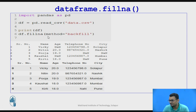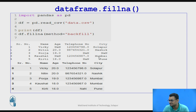If I use method='backfill', it takes the value from the next row to fill the missing value. You can see that the age of Wiki was missing, and using the backfill method the age of Wiki becomes 20, which is the value from the next row.